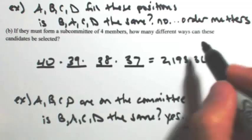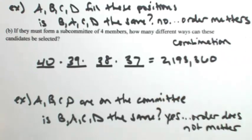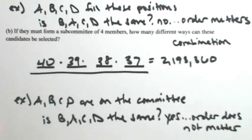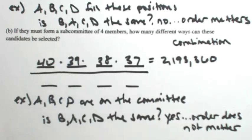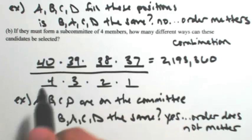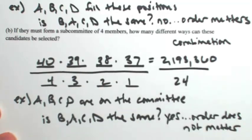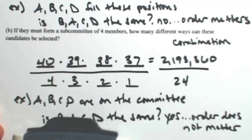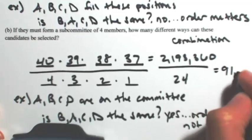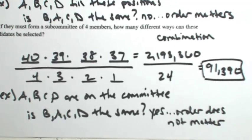So because the order does not matter, this is an example of a combination, which means that we have to go one step further. We need to divide by the amount of repeats that we have. So if I have four people, then I have four ways to mark them out. So four ways for the first one, three, then two, then one. In other words, four factorial. So I'm going to divide that out by 24. You get a smaller number. We have 91,390 ways to make a subcommittee of four members.